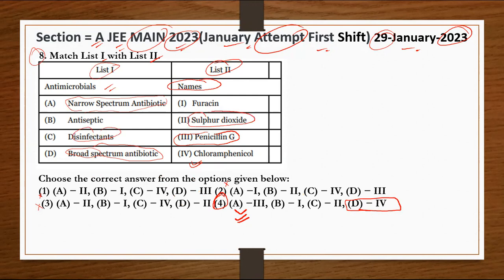And our antiseptic is furacene. So this means option number 4 is our right answer. Is that point clear?